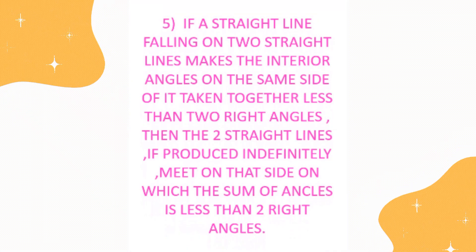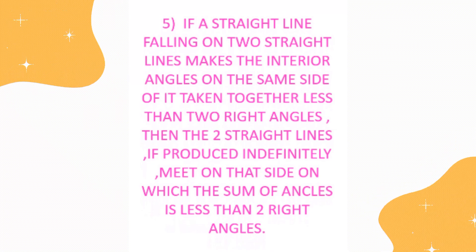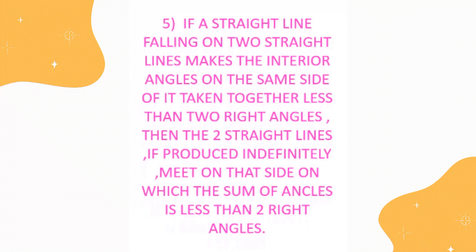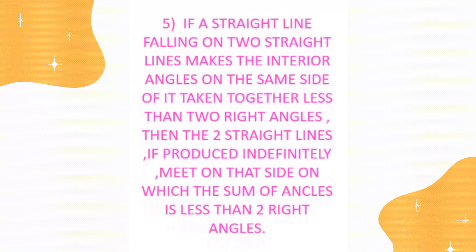5. If a straight line falling on two straight lines makes the interior angles on the same side of it taken together less than two right angles, then the two straight lines, if produced indefinitely, meet on that side on which the sum of the angles is less than two right angles.